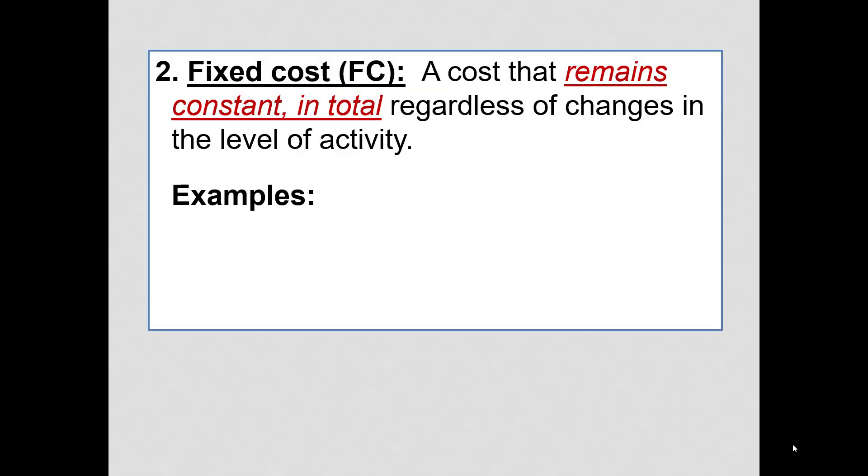Next up, fixed costs. These remain constant in total regardless of the changes in the activity level. An example might be rent or salaries.